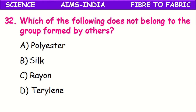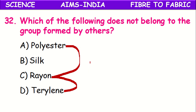Which of the following does not belong to the group formed by the others? The fibers given are polyester, silk, rayon, and terylene. Polyester, rayon, and terylene are artificial or man-made fibers, whereas silk is obtained from silkworm — it is an animal fiber and a natural fiber. So silk does not belong to the group of the other three artificial fibers.